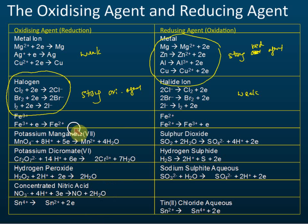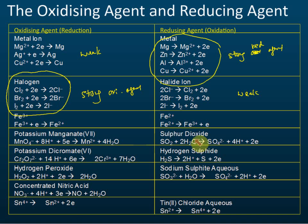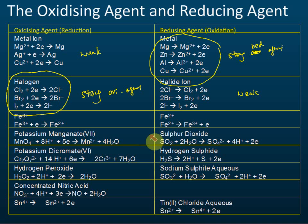The common oxidizing agents we learned before are potassium manganate, potassium dichromate, hydrogen peroxide, and concentrated nitric acid. For reducing agents, memorize these four: sulfur dioxide, hydrogen sulfide, sodium sulfide aqueous, and tin(II) chloride aqueous.